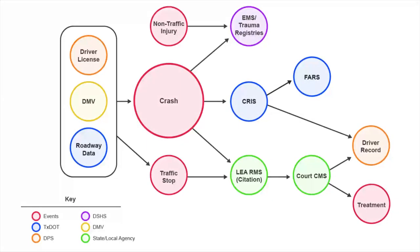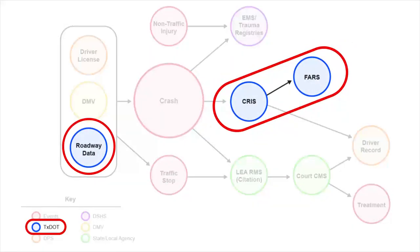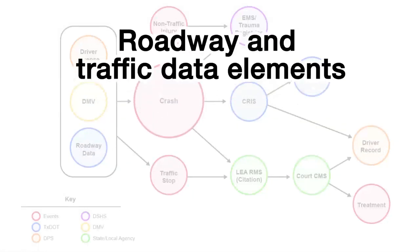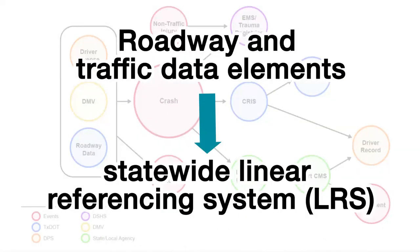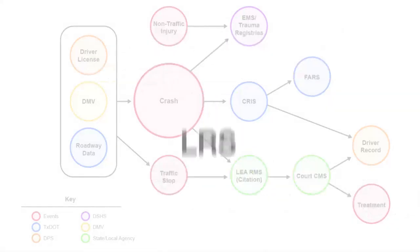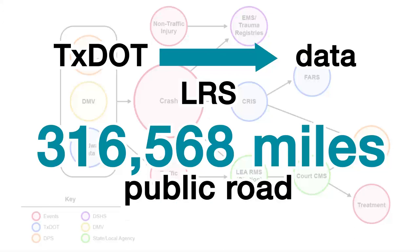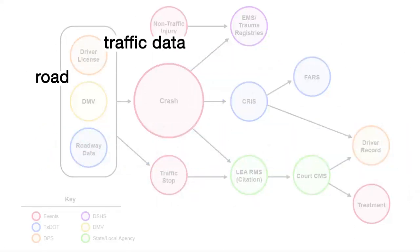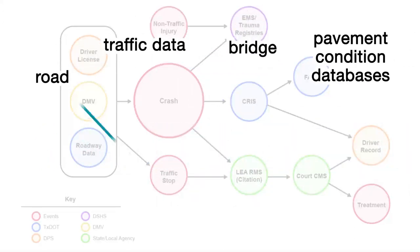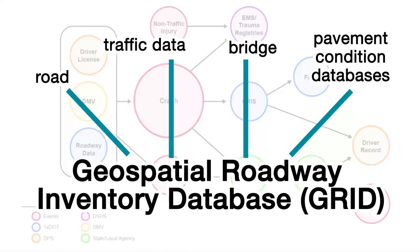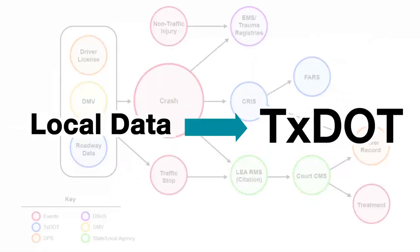The Texas Department of Transportation is the agency responsible for collecting and maintaining the roadway information for the state. Roadway and traffic data elements are maintained within a statewide linear referencing system. Through the system, TxDOT maintains data on over 300,000 miles of public road. When you provide geographic reference points, it enables linkages between road, traffic data, bridge, and pavement condition databases in the Geospatial Roadway Inventory database. Local data is submitted to TxDOT then validated to be included in the system.